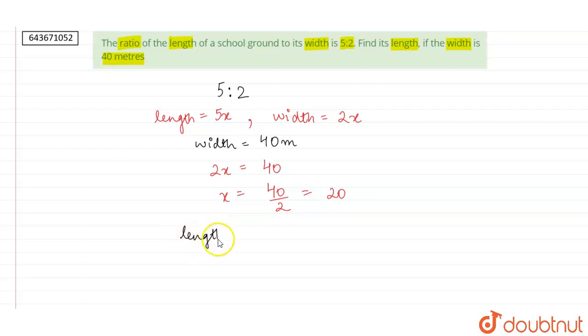So our length will be equals to 5 into 20 as length is given as 5x. Therefore our length will be equals to 5 into 20 is 100 meters. This is our answer.